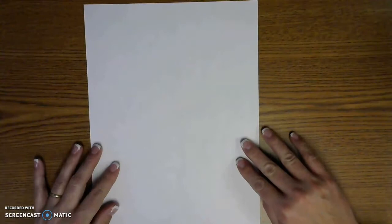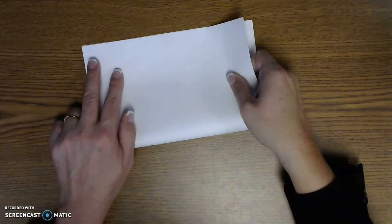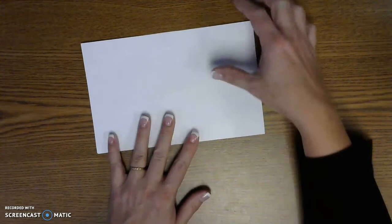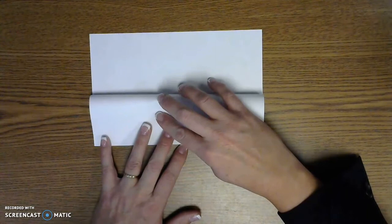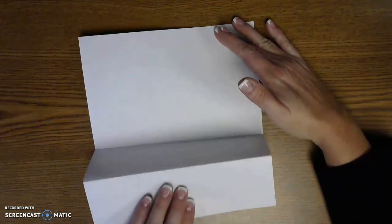So first we start with a regular piece of paper and we're going to hold it portrait instead of landscape. So the long way is this way. And you'll start by folding your paper in half. And then we take this top piece and fold it down by half also. Half of a half is a quarter. So you'll have a section like that.